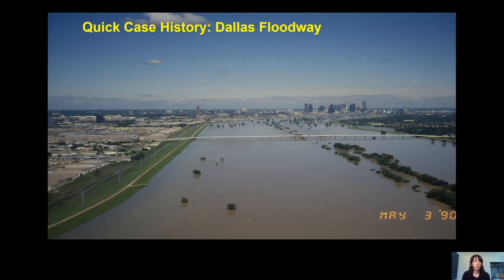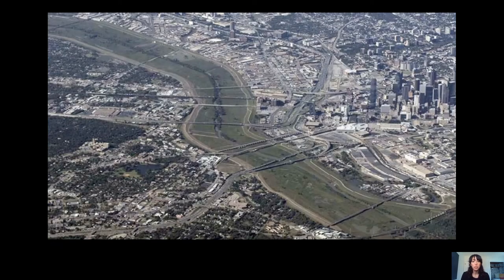Another case history is the Dallas Floodway. This photo is from the 1990 flood, and the system has had some performance issues that factored into the evaluation of slope stability and the risk assessment for the system. A more recent photo shows the project in relation to the city, and you can see how densely populated the area is behind the levees. The growth in this area has been substantial over a relatively short amount of time, which has a direct correlation with the current level of risk associated with this system.